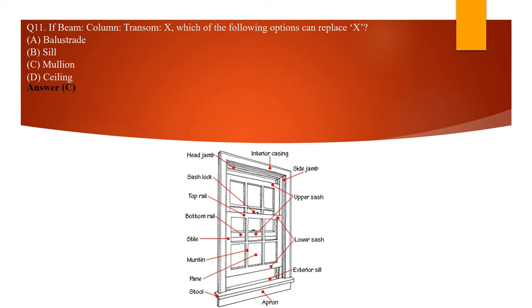The next question: if beam is to column, then transom is to what? We know a beam is a horizontal element and a column is a vertical element of a structure. A transom is also a horizontal element — in a continuous window arrangement, the horizontal element is the transom and the vertical elements are the mullions. So transom is to mullion.